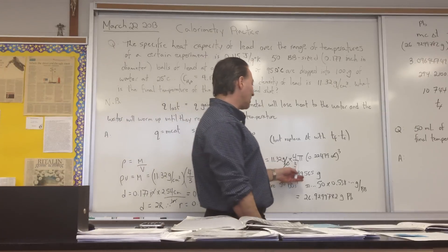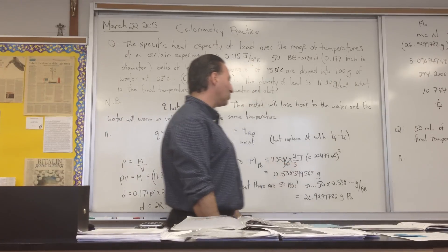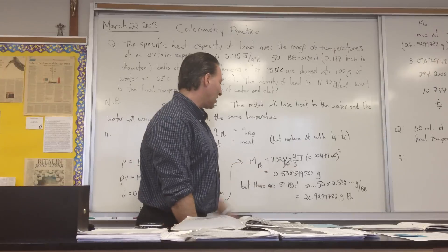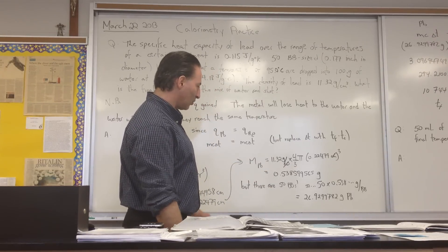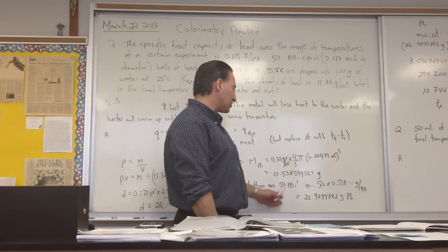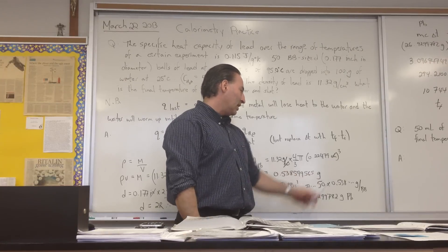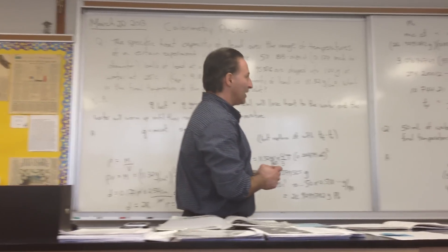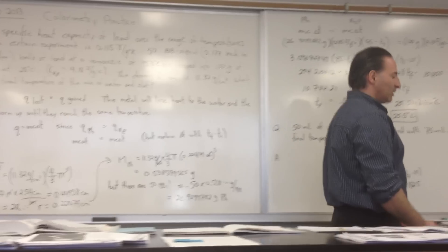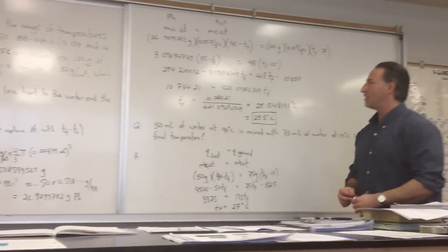11.32 times 4/3 pi times 0.22 cm all cubed gives you that each ball weighs 0.53 grams worth of lead. There's 50 BBs, so we're going to multiply that number by 50, and we get that there's 26.9 grams of lead being added to the water, and the lead is at a temperature of 95 degrees Celsius.